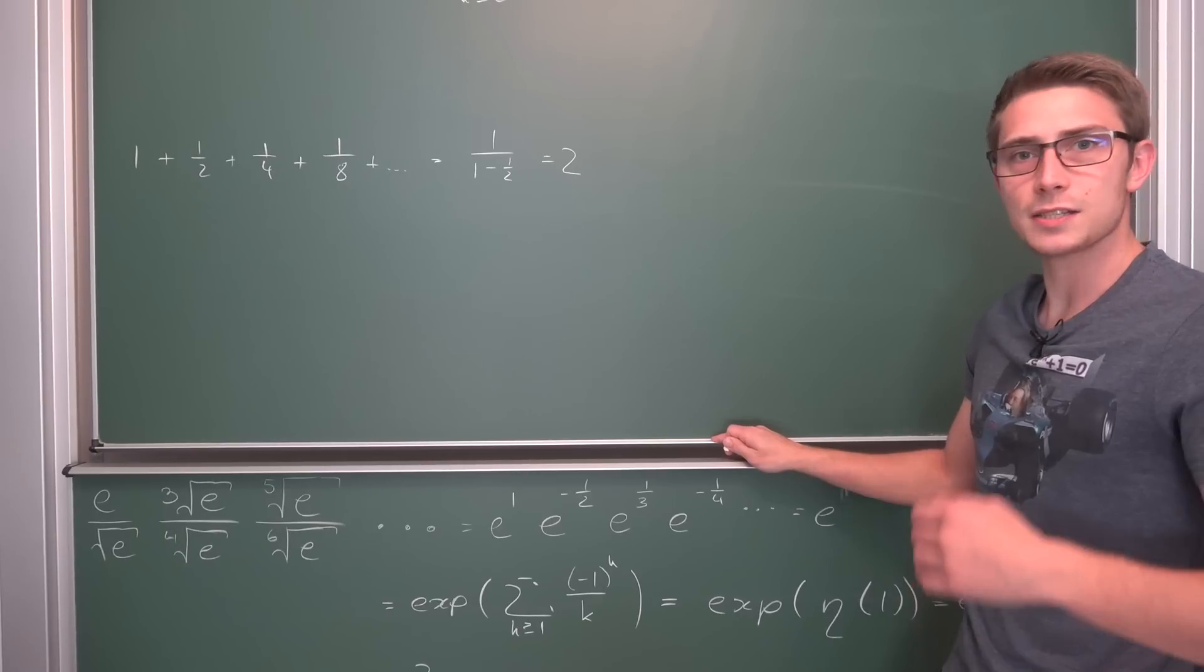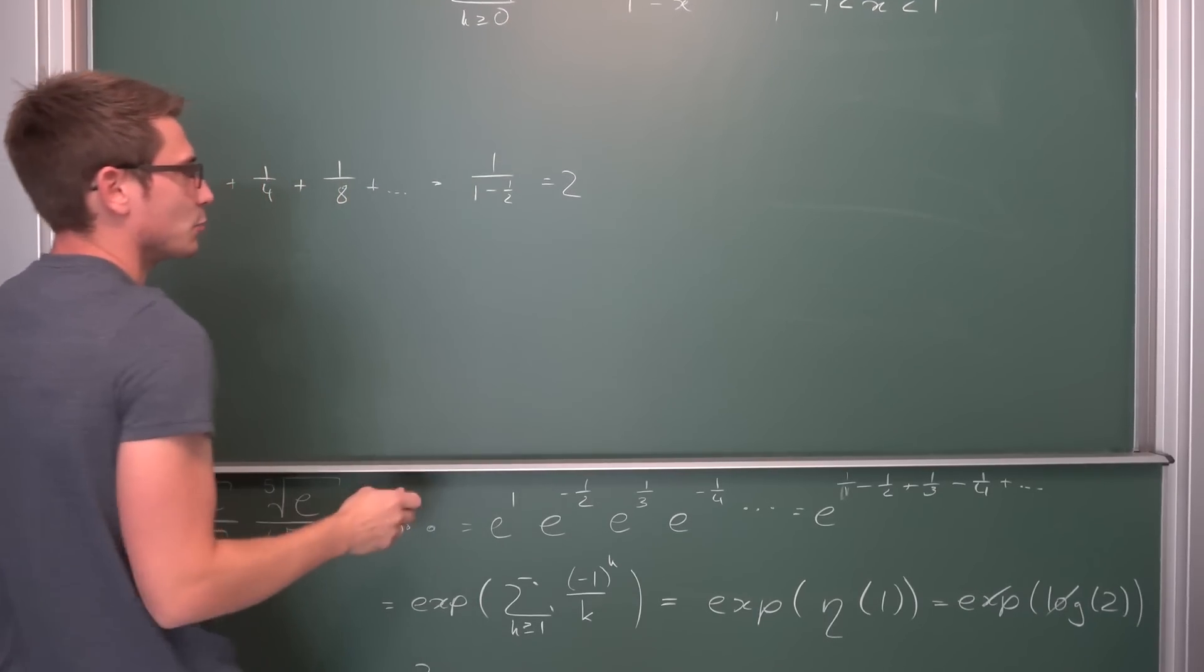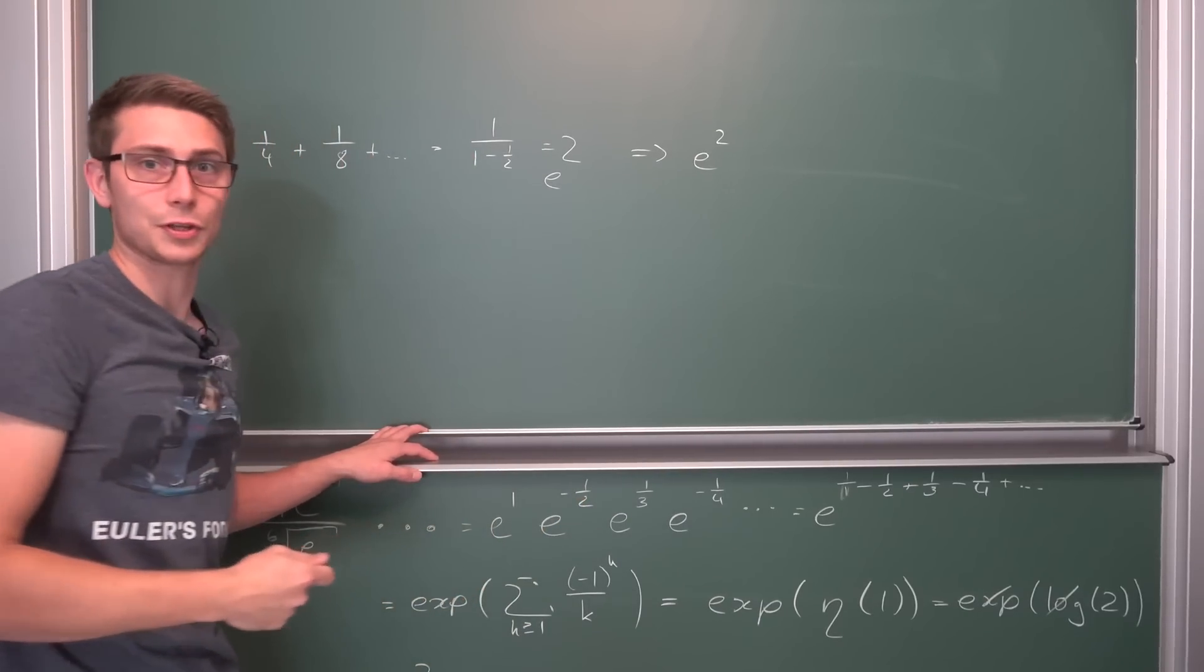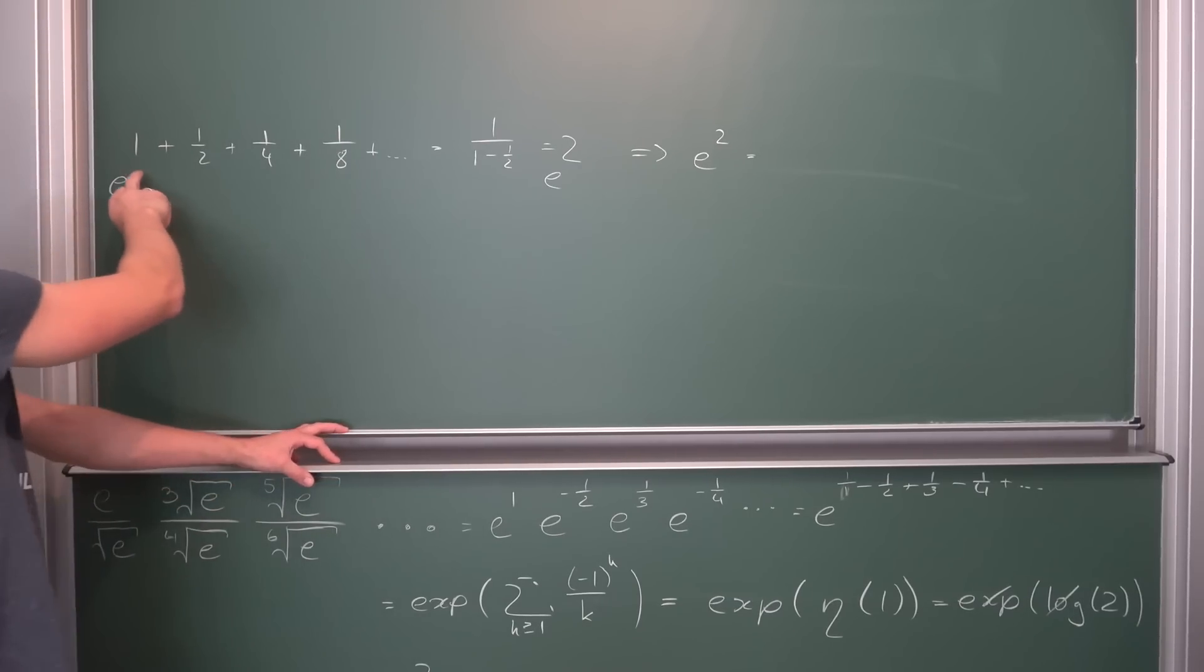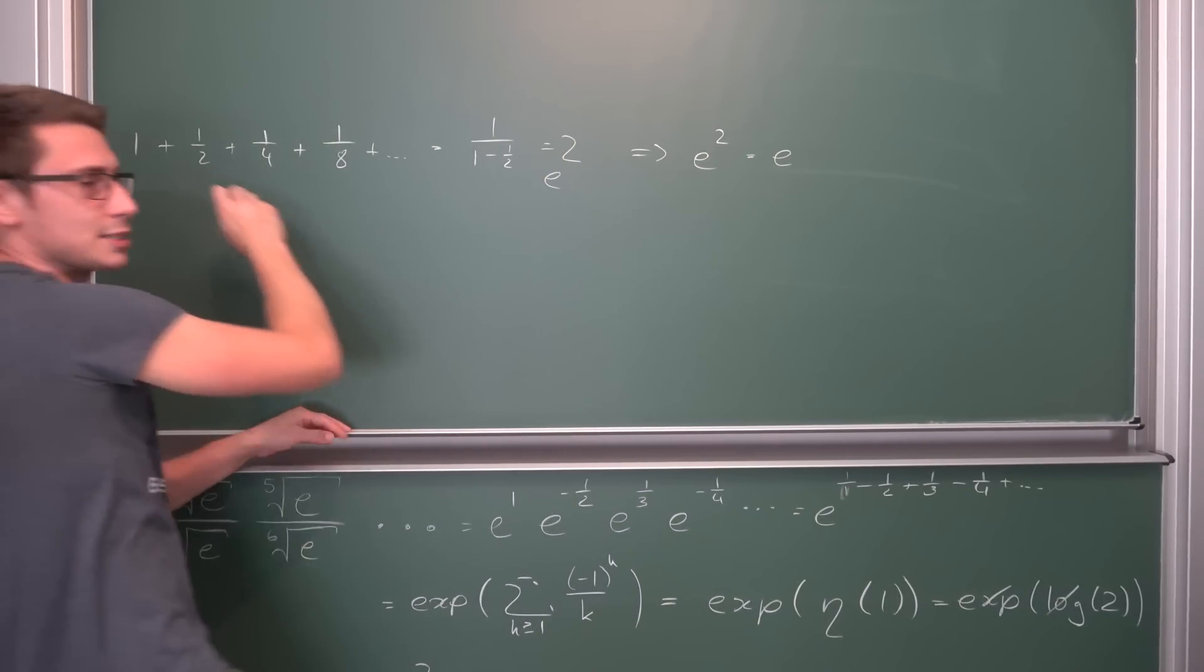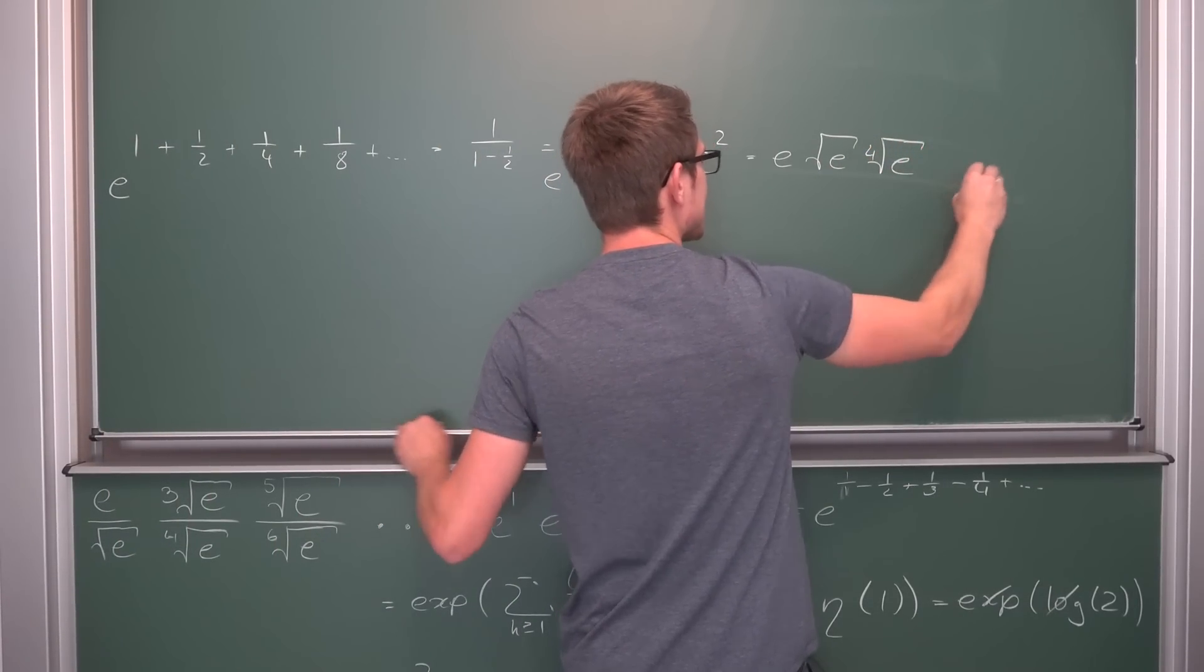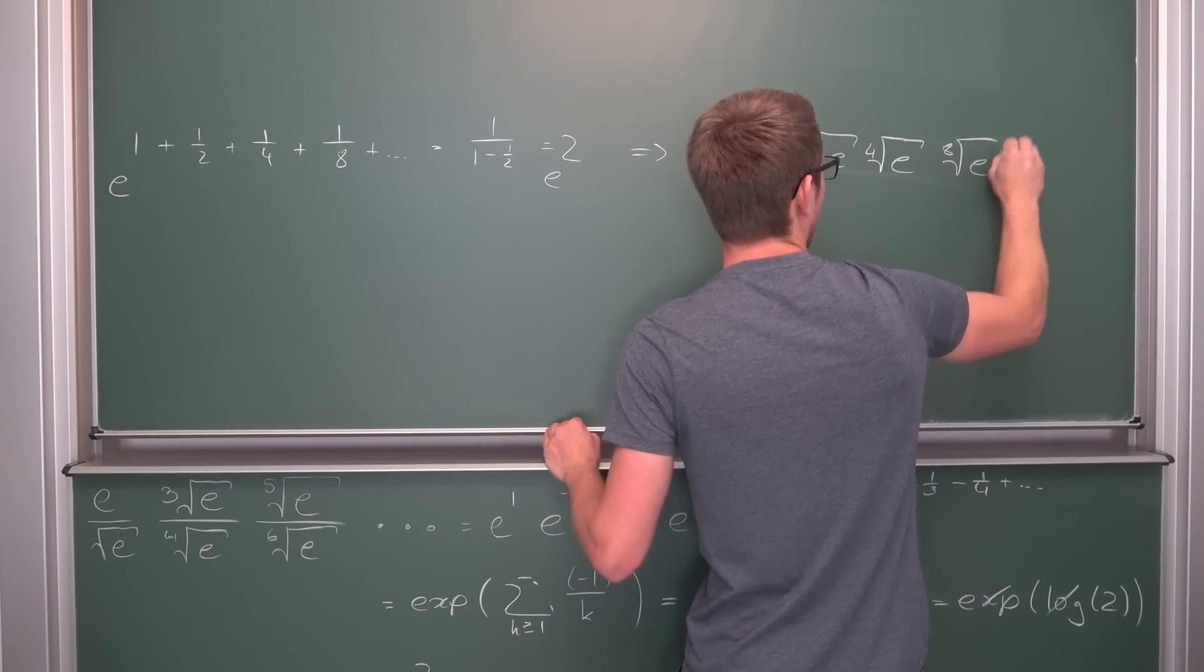What about the summation one plus one-half plus one-half squared is one-quarter, times one-half is one-eighth and so on. This is going to converge to one divided by one minus one-half. One minus one-half is one-half. Taking the reciprocal, this is going to turn into two overall. So now we just need to put an e under it.